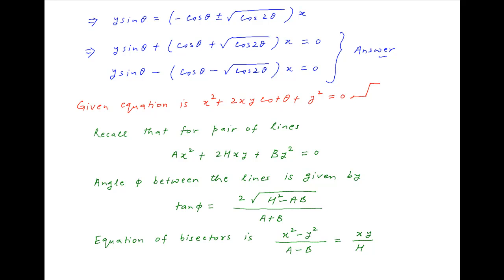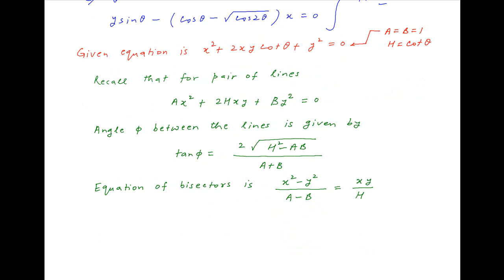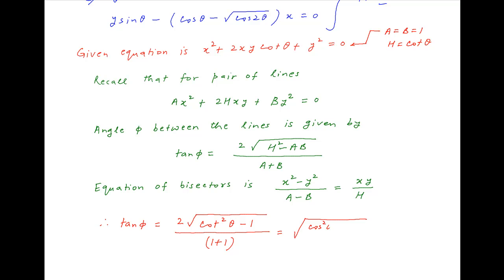In this case, A = 1, B = 1, and H = cot θ. Substituting these values, tan φ = 2√(cot²θ − 1) / (1 + 1), which equals √(cos²θ/sin²θ − 1) = √(cos 2θ) / sin θ.